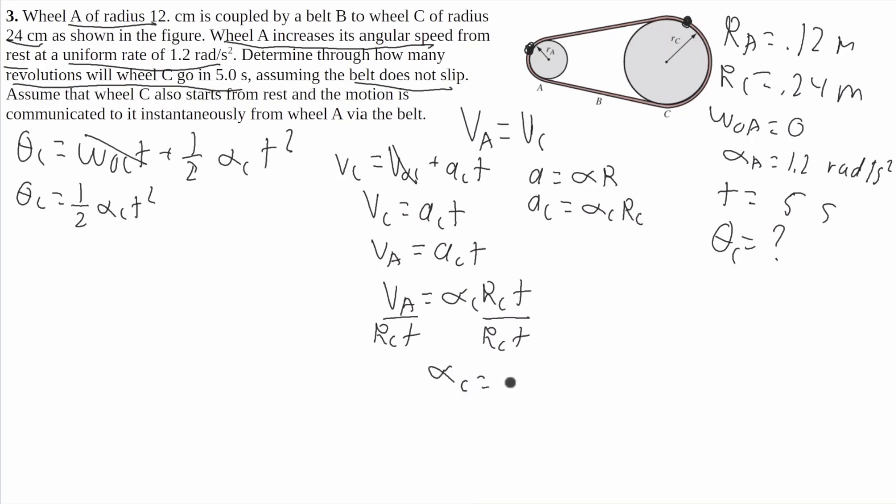Now to find V A, I'm going to use a translational equation for this A term here. V A equals V naught A plus A A T. Since A starts from rest, then it'll cross out, so we'll get V A equals the translational acceleration of A times T.